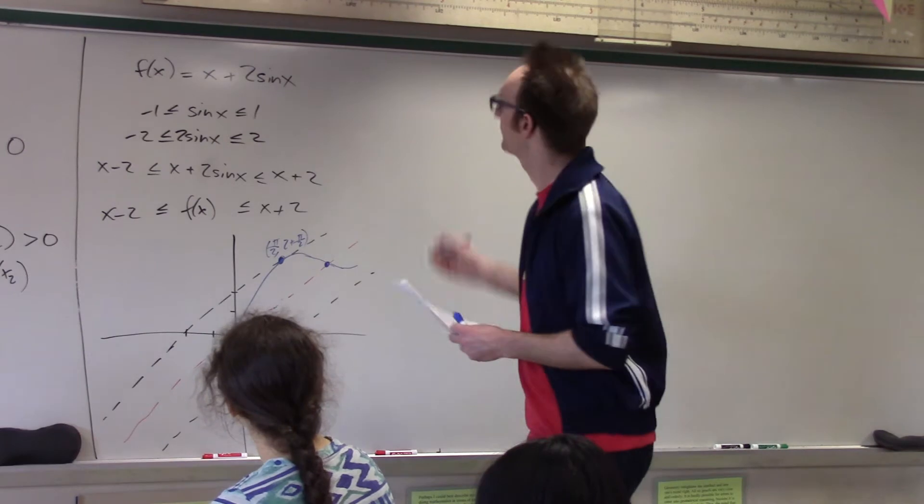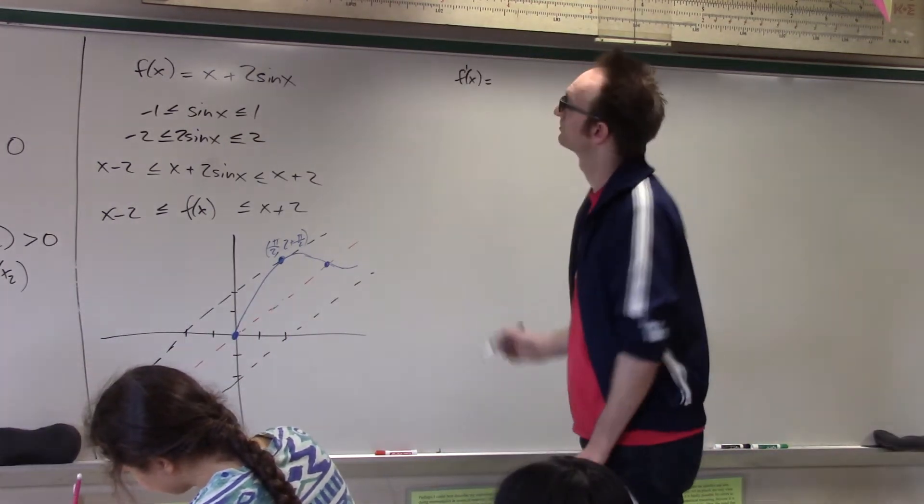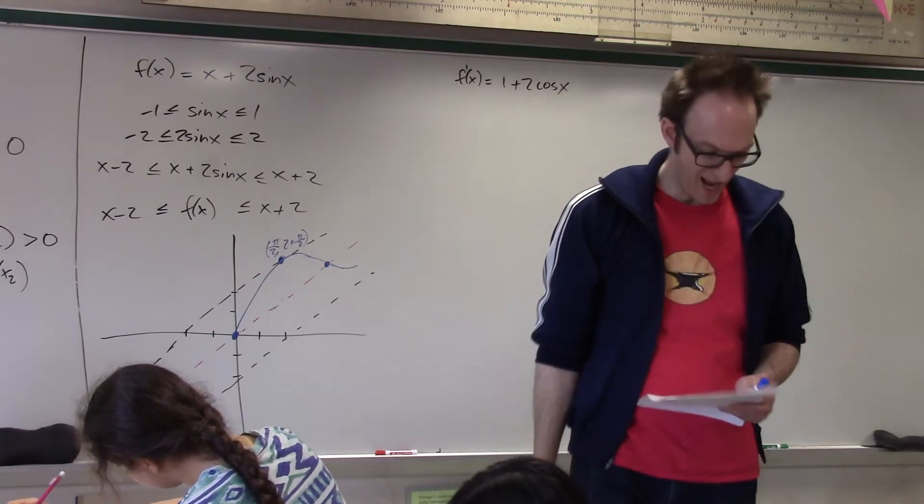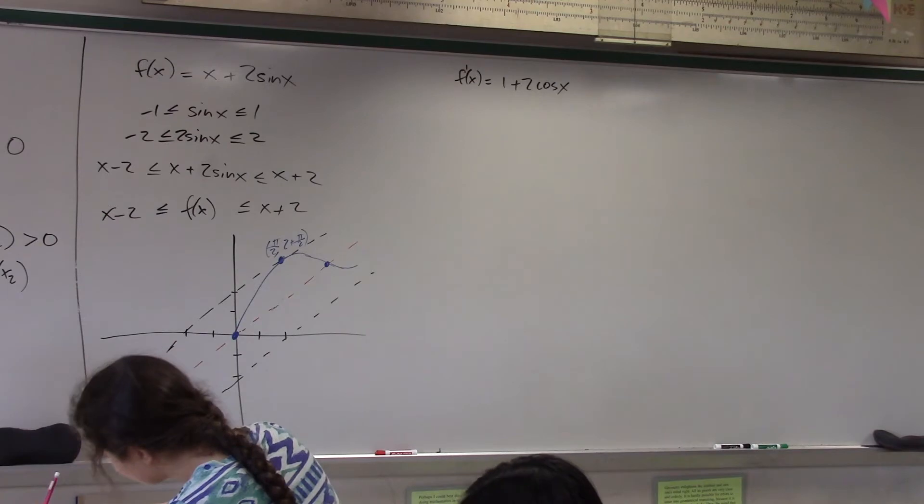So, take the derivative. Let's do it. What is the derivative of this function? 1 plus 2 cosine x. Okay. And, I would now like to know when this function is positive and when it is negative.